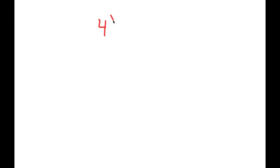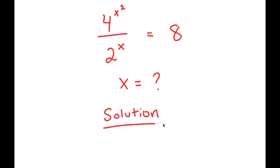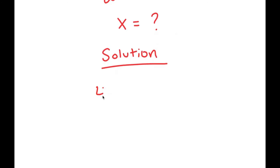In this video, I'm going to solve the equation 4 to the power of x squared over 2 to the power of x is equal to 8. The only variable in this equation is x. I'll start by writing the equation down: 4 to the power of x squared over 2 to the power of x is equal to 8.